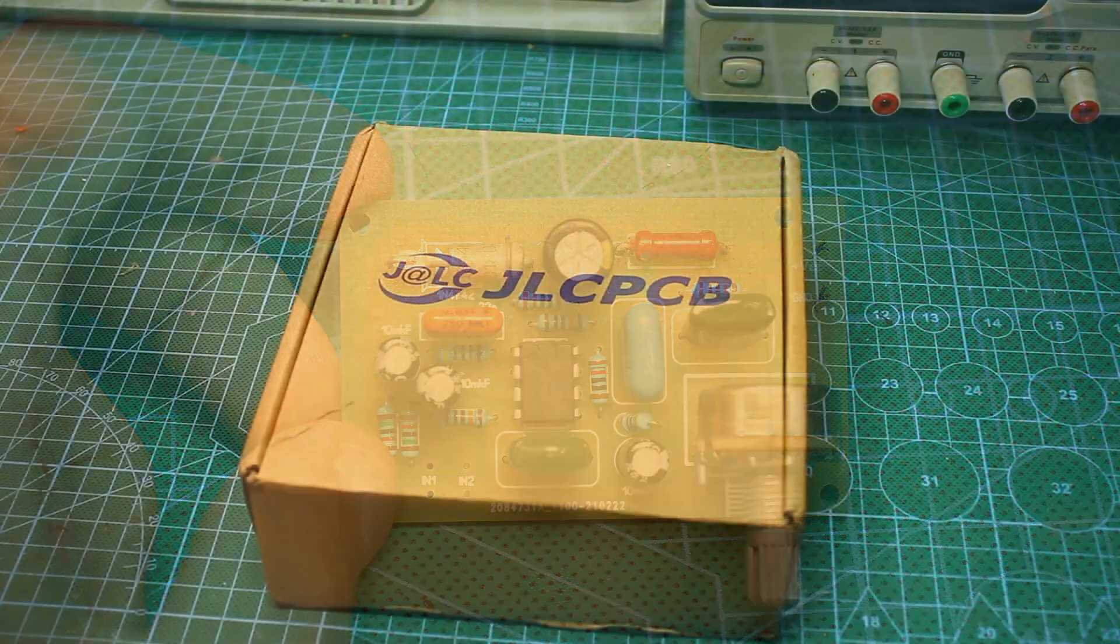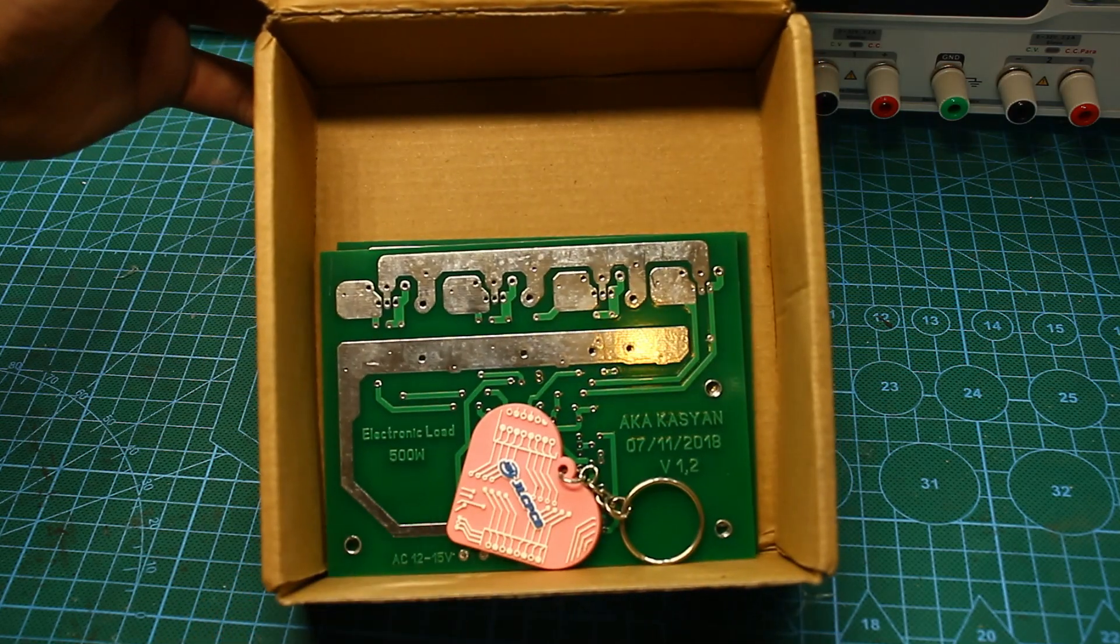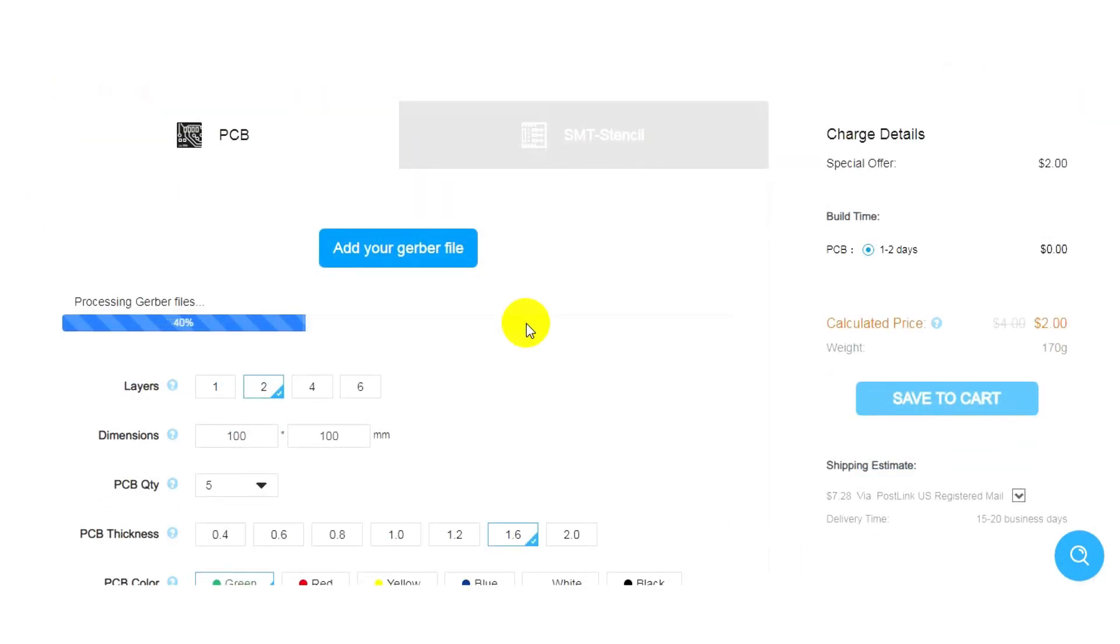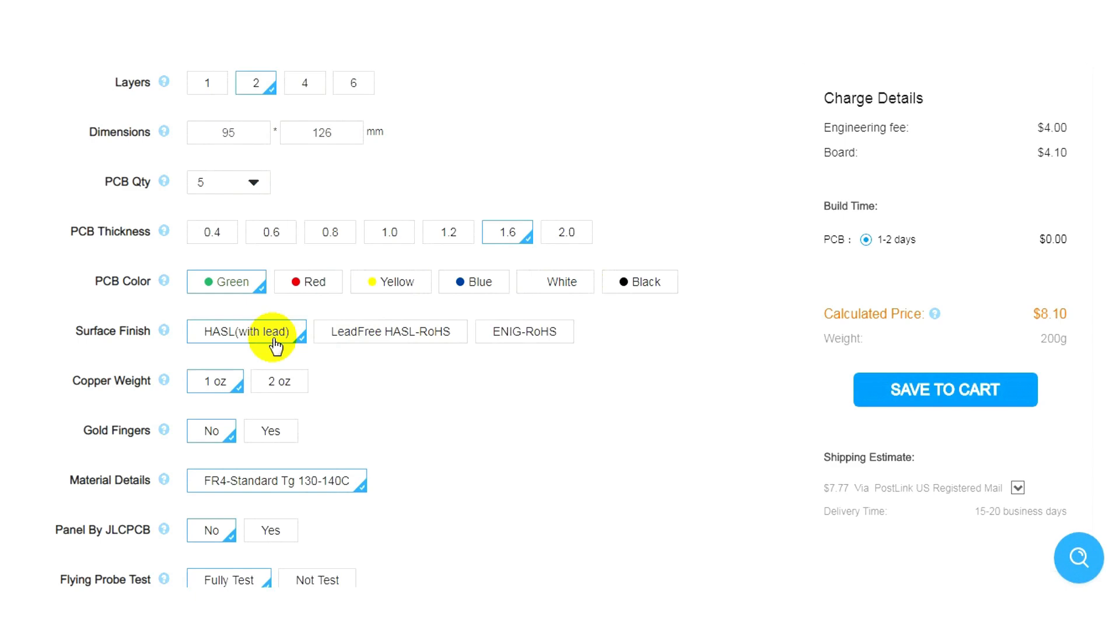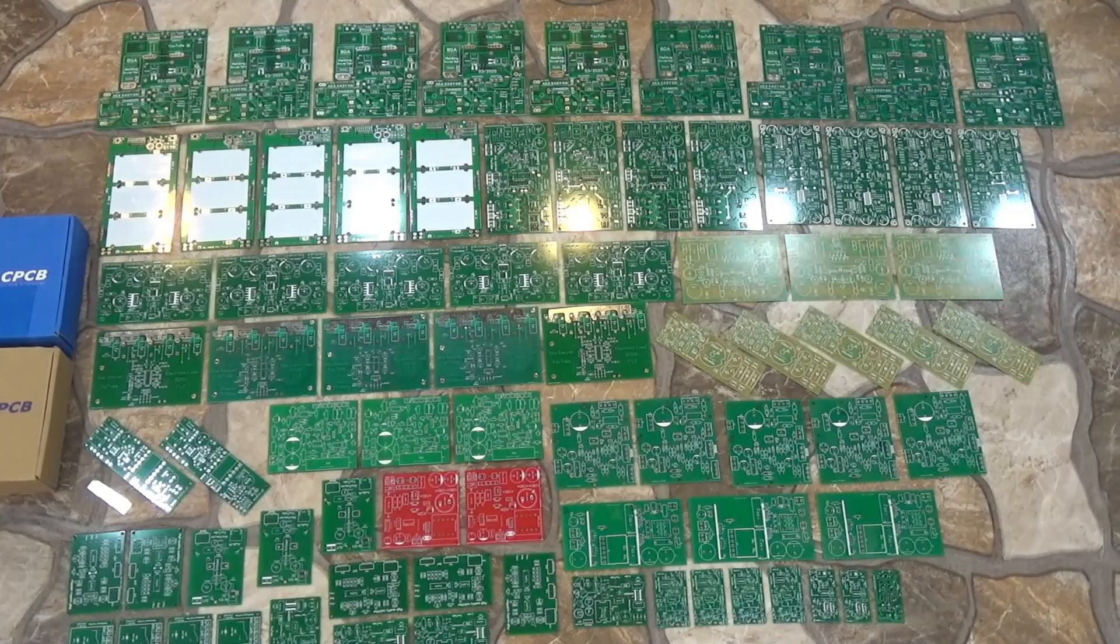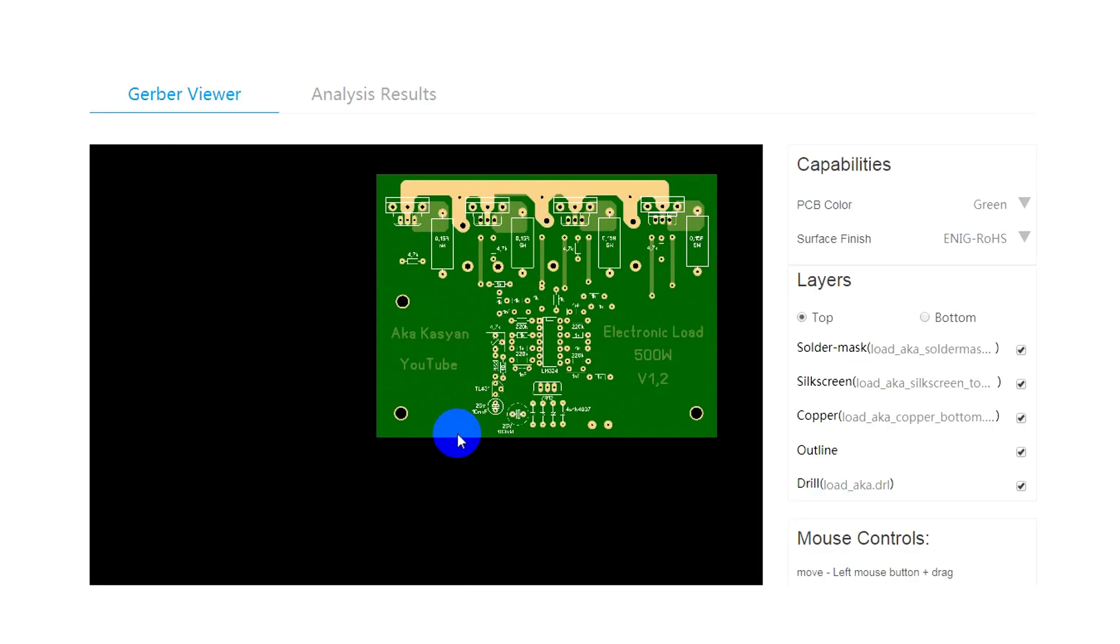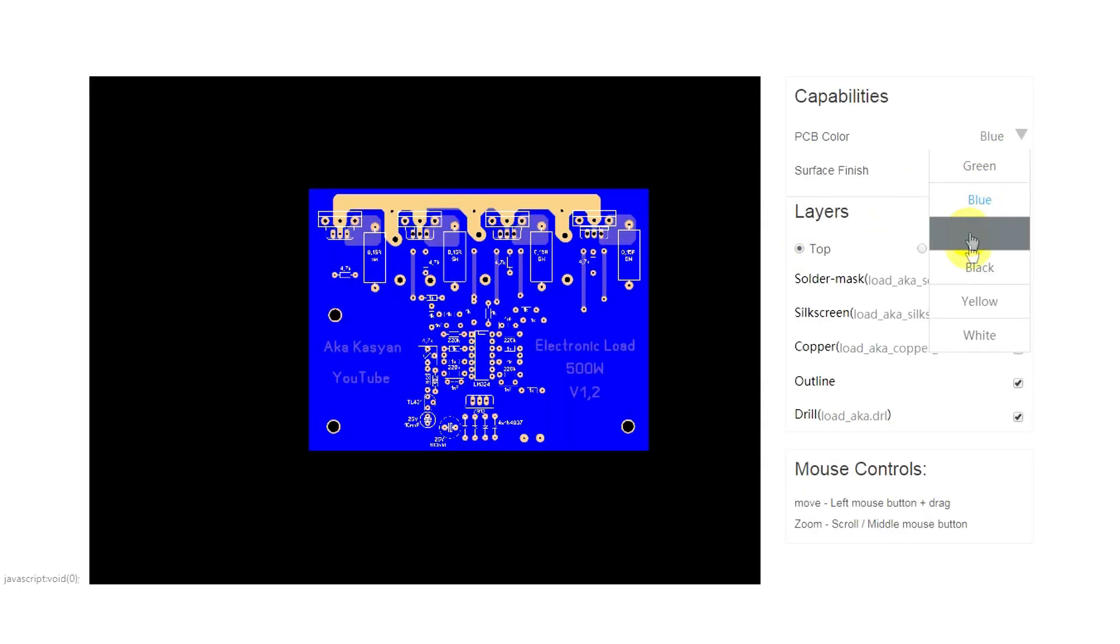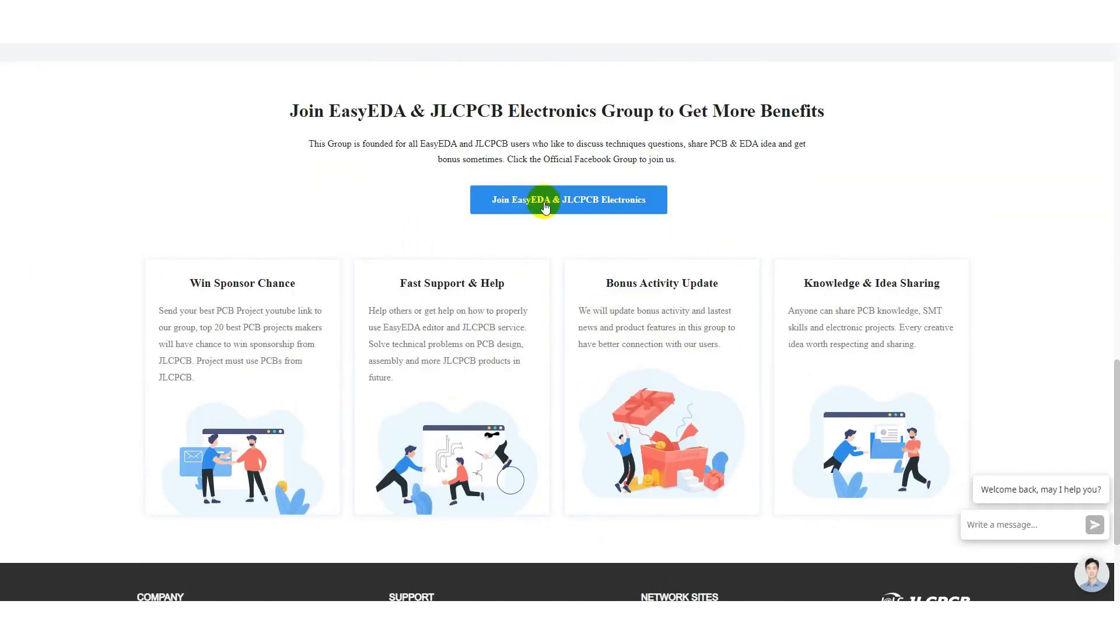There will also be Gerber files for ordering printed circuit boards at the factory of our sponsor JLCPCB. All you need to do is upload folders called Gerber to the company's website and select the options you need. Then you pay for the order and that's it. The factory can make boards of any complexity, size, and number of layers. You can examine the appearance and check the board in a convenient view of Gerber files available on the website. The high quality and reasonable prices are guaranteed. The link to the JLCPCB website can be found in the description under the video.